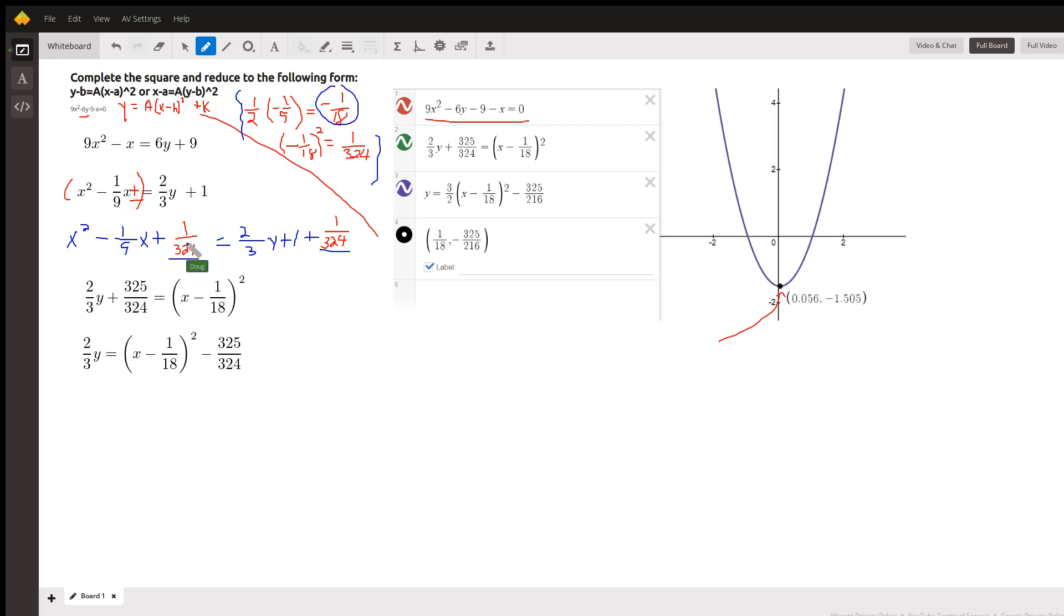So if I add 1 324th to the left side, I've got to add the same number to the right side to keep it in balance. And now I can picture actually this term, or these terms on the left side of the equal sign. 2 3rds y plus, if I add these two terms together, I get 325 324ths equals writing this trinomial, perfect square trinomial, as a binomial squared is x minus half of this 1 ninth is negative 1 18th. So x minus 1 18th, the quantity squared. So if you square this binomial, this is what you'll get.